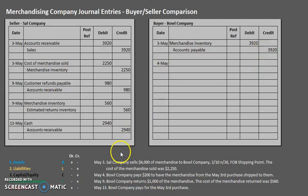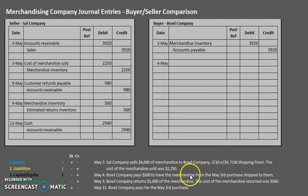For the May 4th entry, keep in mind this was FOB shipping point, so the buyer was responsible for paying shipping. Since the buyer is responsible, they will have to pay the $200 and record an accounting entry. The account we need to use for shipping is Merchandise Inventory — not an expense — because this is a cost of getting that merchandise to them and in working condition. So we debit Merchandise Inventory and credit Cash, since the buyer is paying $200.